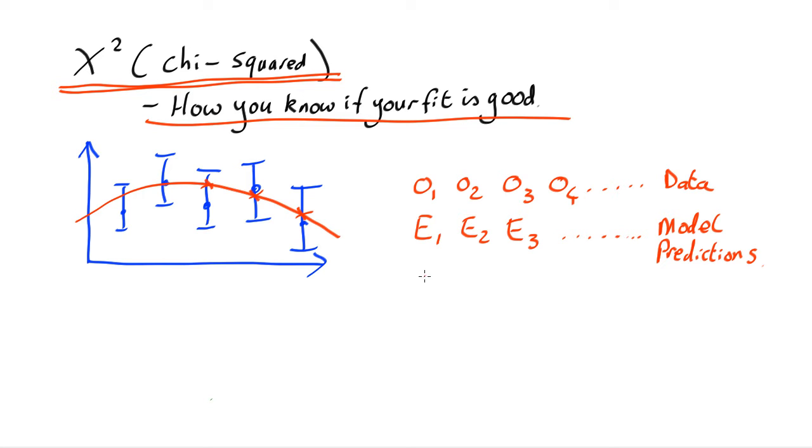And finally you know the uncertainties. You know these uncertainties all the way along here. Sigma 1, sigma 2, sigma 3 and so on.